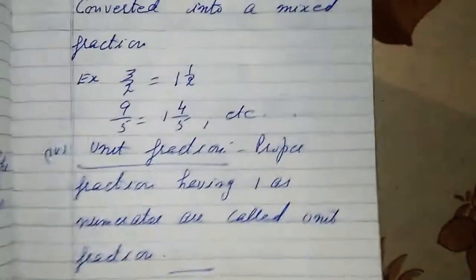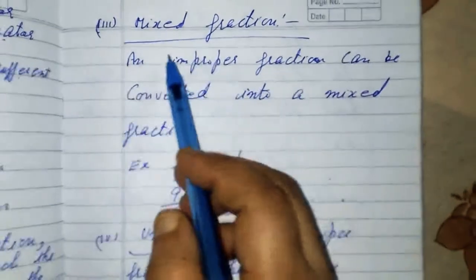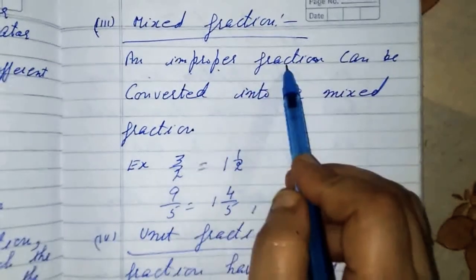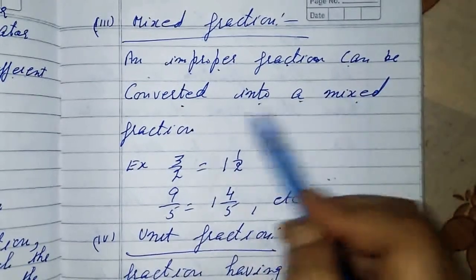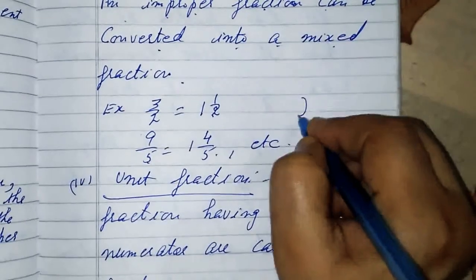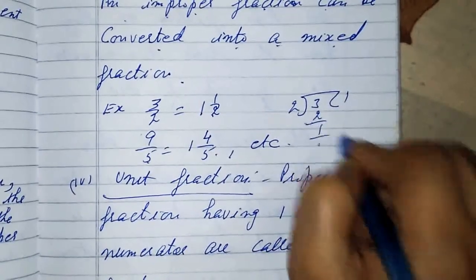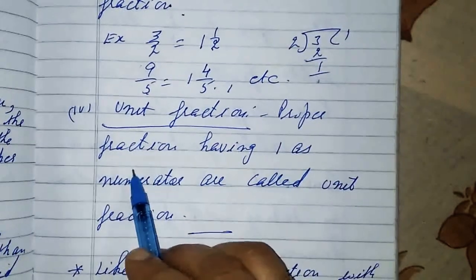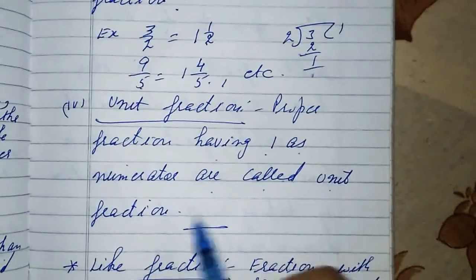Next, mixed fraction. An improper fraction can be converted into a mixed fraction. Fractions having one as numerator are called unit fractions.